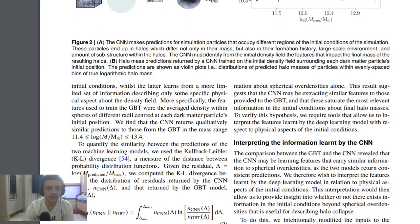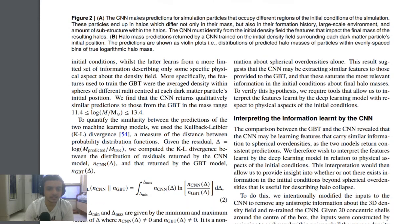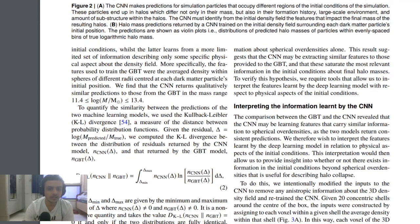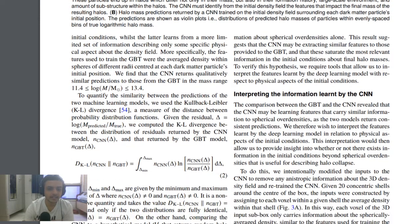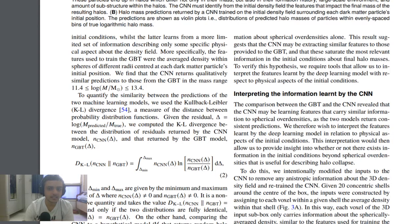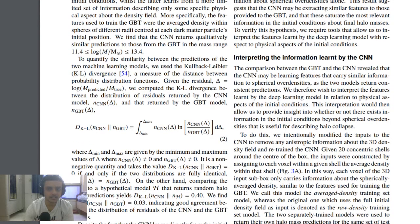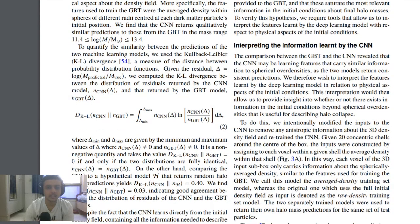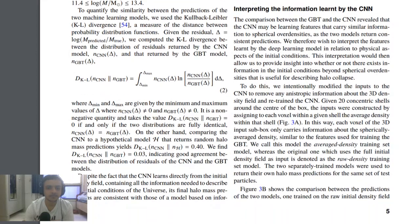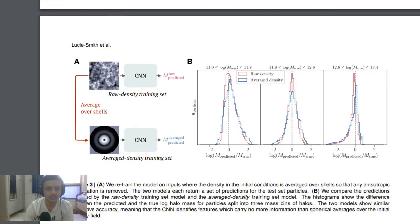They used KL divergence as a way to validate the features that the CNN learns. They also retrained the model and again had some graphs, trying to match things up.